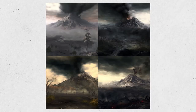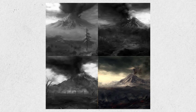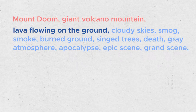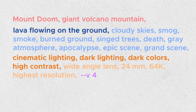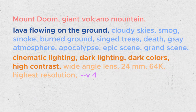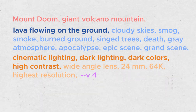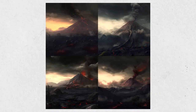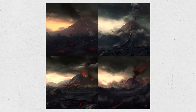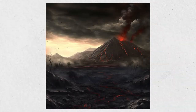Again, we get four images. I like the fourth one, so I'll modify it a bit more. I will add lava flowing on the ground, cinematic lighting, dark lighting, dark colors, and high contrast to my prompt. Honestly, all of these look pretty good to me. I could keep going and modify my image more, but I'm gonna upscale the third one and move on to my third landscape.